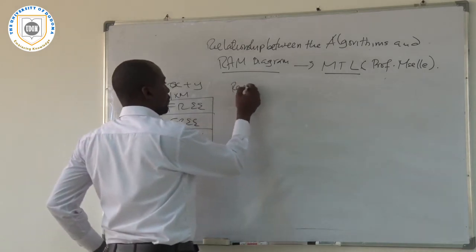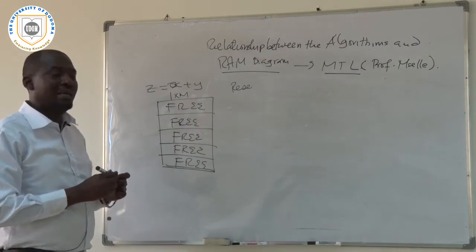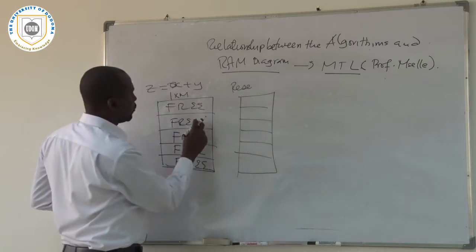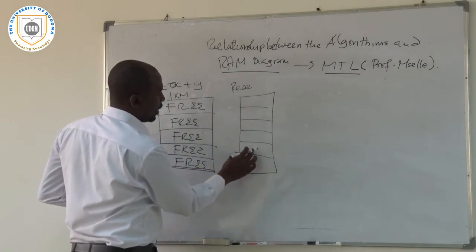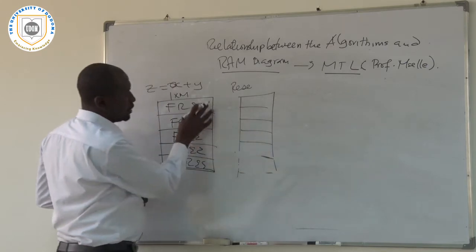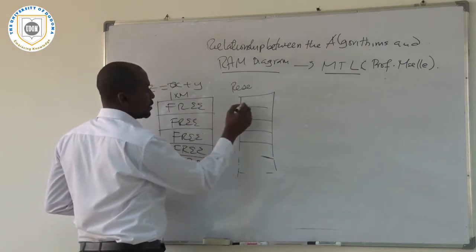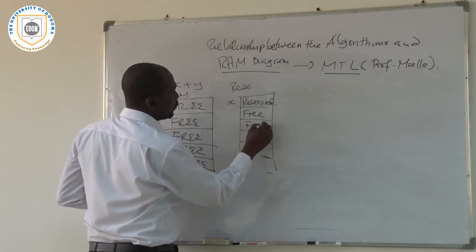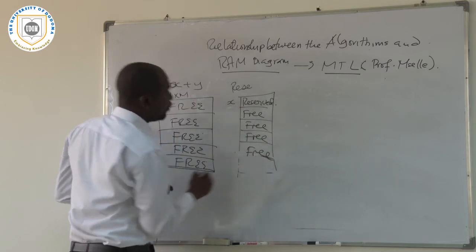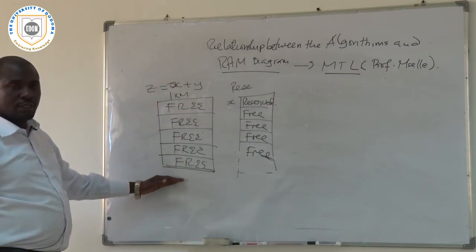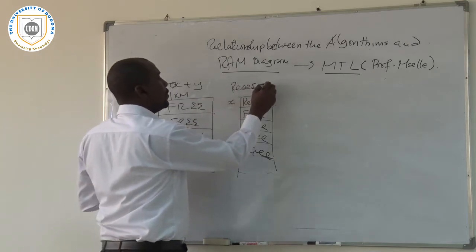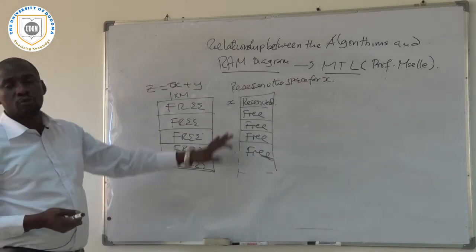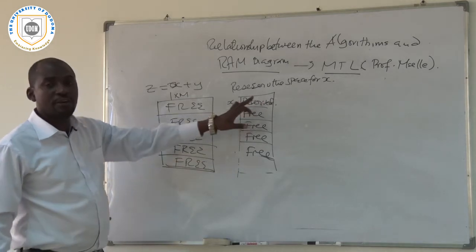When you say you reserve the first space for input X, if that RAM was having 5 rooms, all completely free, and you reserve one space for X, that space becomes reserved while the remaining spaces stay free. When you then reserve a second space for Y, now two spaces are reserved — one for X and one for Y — while the remaining three stay free.